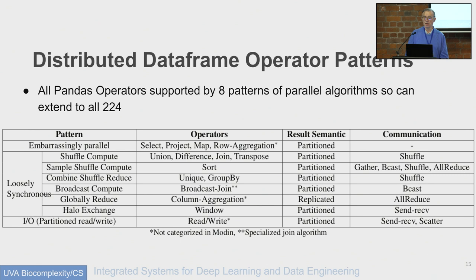If you look at those 224 operators, the parallel structure falls into eight types. The simplest is embarrassingly parallel — for example, adding data frames together, where every addition can be done in parallel. There are also shuffle operators, map-reduce operators, and things like that. We found eight different motifs, implemented each of them, and so it's now very mechanical to extend to all operators.